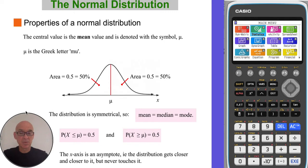Because the distribution is symmetrical, the probability of x having a value less than the mean value would be equal to 0.5, that's this area here. And the probability of x having a value greater than or equal to the mean value is also equal to 0.5, that's all these probabilities in this area here.